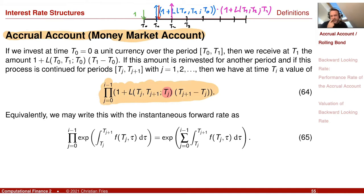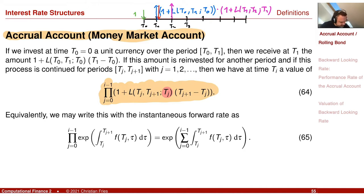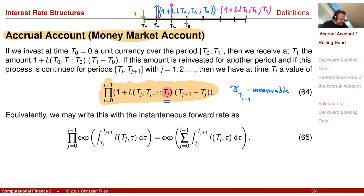This object is a random variable. With respect to measurability, this object is F_{T_{i-1}} measurable. It is not F_{T_0} measurable in general, because you see that there is a dependency on the times T_j where j runs up to i minus 1 — it is known only at the end.